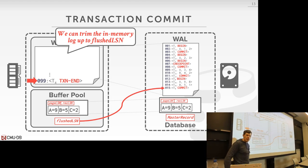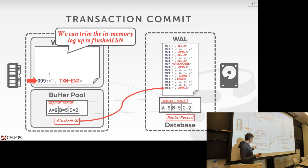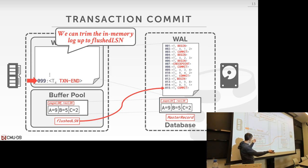If the flush LSN is less than the page LSN, then you can't evict that page. The last log record you wrote out is prior to the page LSN, so therefore the log record that modified this page is not out on disk yet.